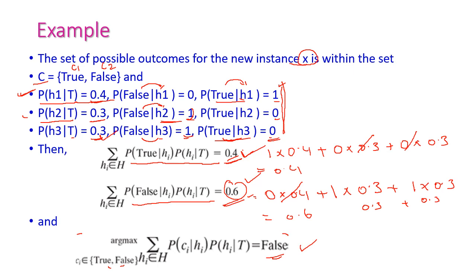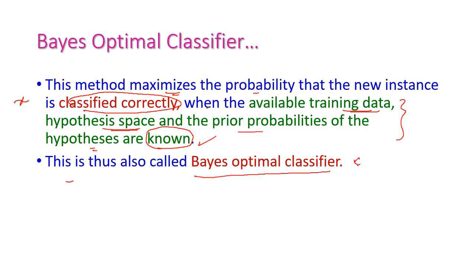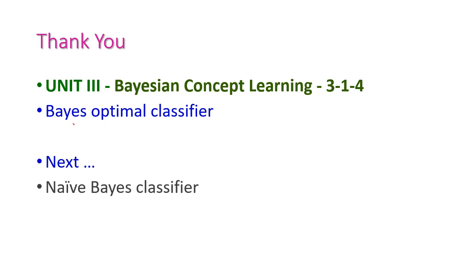This method maximizes the probability that the new instance is classified correctly — that is, the new X is classified correctly when the available training data, hypothesis space, and prior probability of hypotheses are already known. If all these data are given, the new instance will be classified correctly. This is called the Bayes' Optimal Classifier. In the next class, I will explain the Naive Bayes Classifier, which is the most important classifier from Bayesian Concept Learning. Thank you.